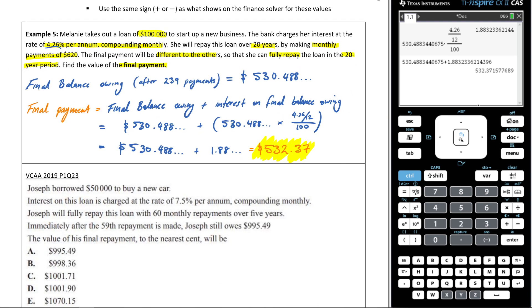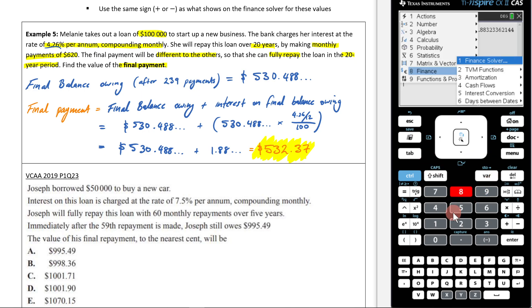So that's the thinking behind it, and it's important that you understand the thinking behind it. I'm now going to show you an alternative way to answer this question. We're going to go back into the finance solver, menu 81.